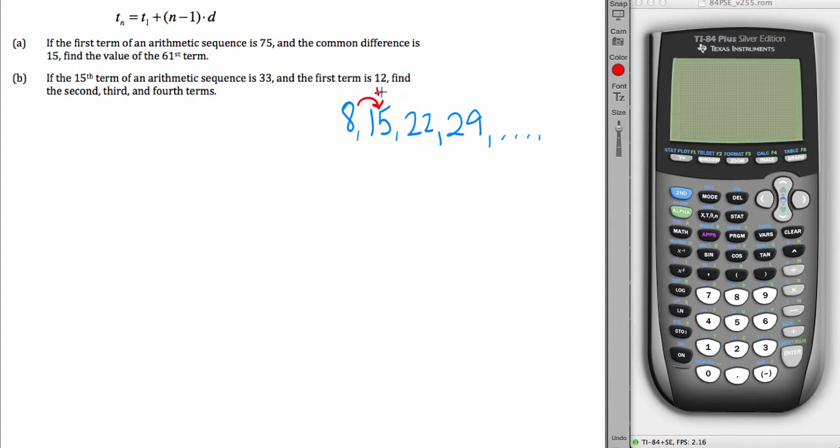Plus 7, 15. Plus 7, 22. Plus 7, 29. And d is 7. That's called the common difference.